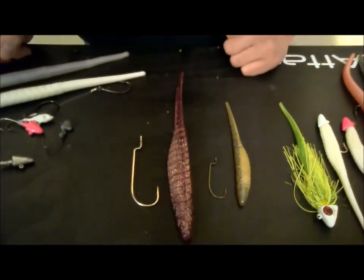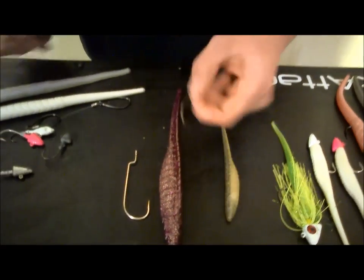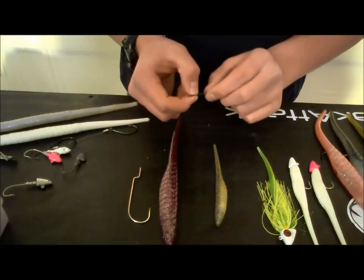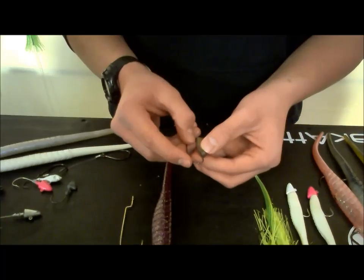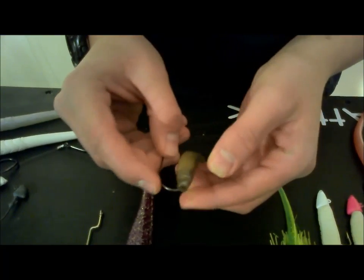Look at a Texas style rigging technique. A lot of freshwater guys would know what I mean by that, but simply you have a, this is a 2-0 Gamigatsu inline wormhawk. So put it in the front, I don't have to cut any of the front off, push it in so the barb is just in there.